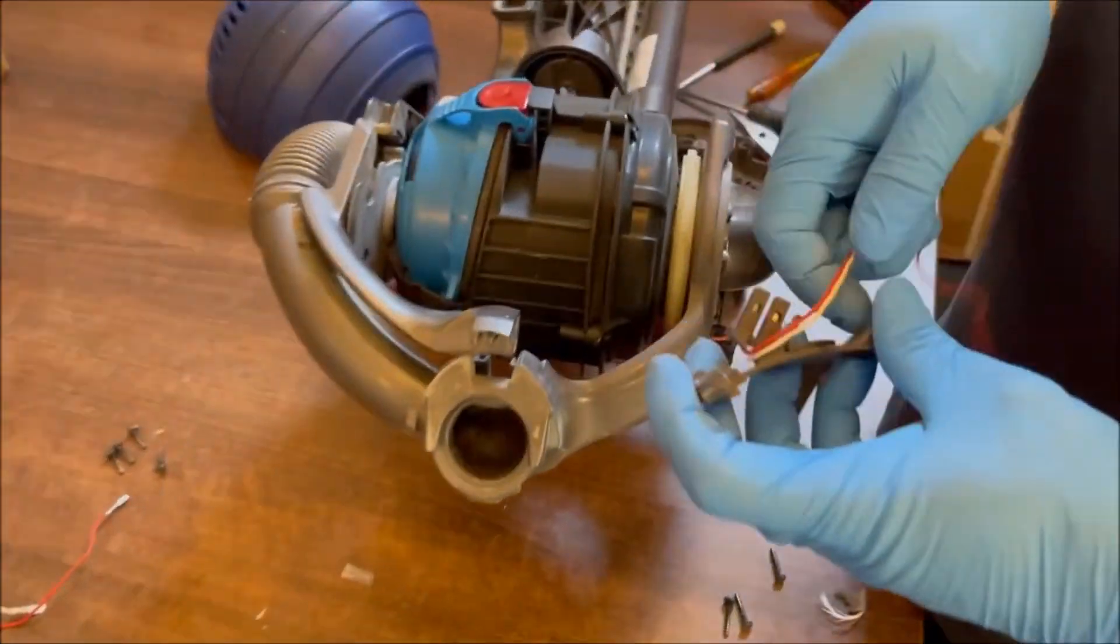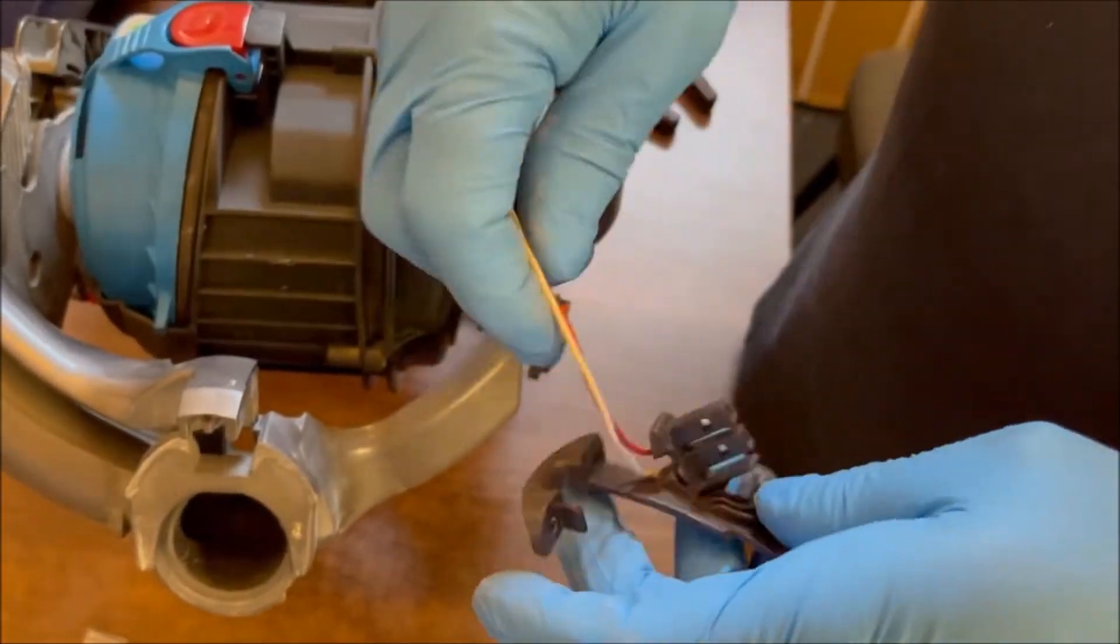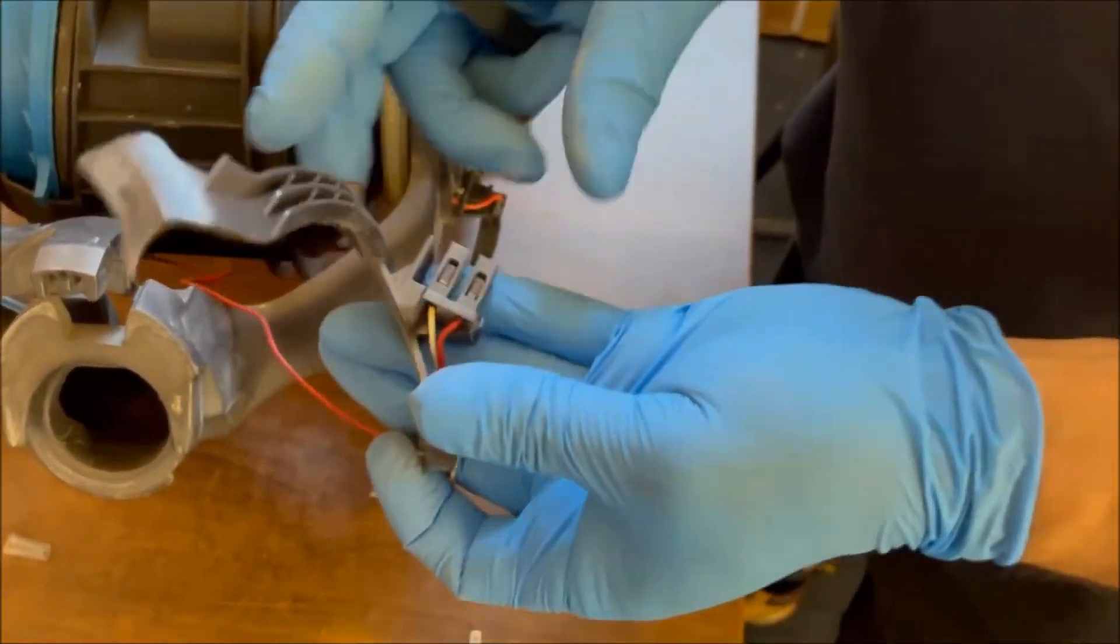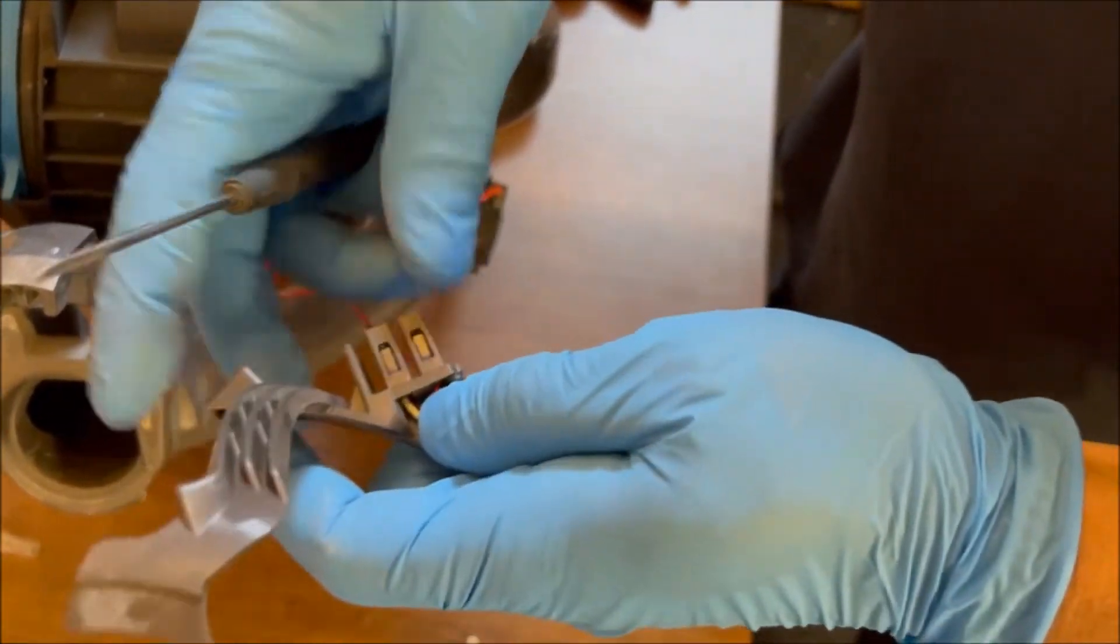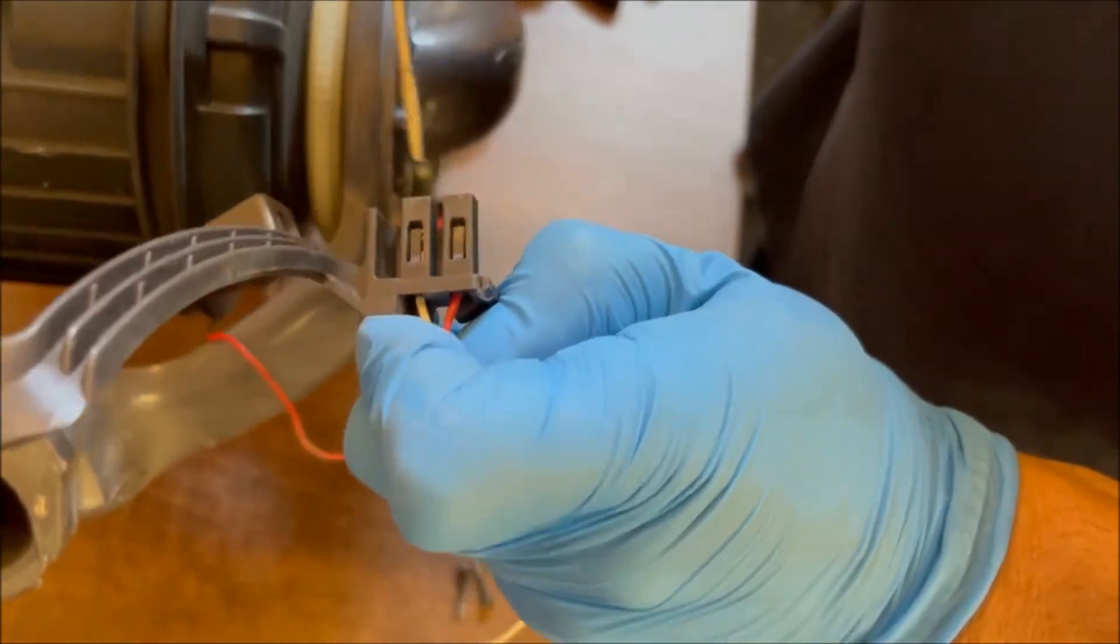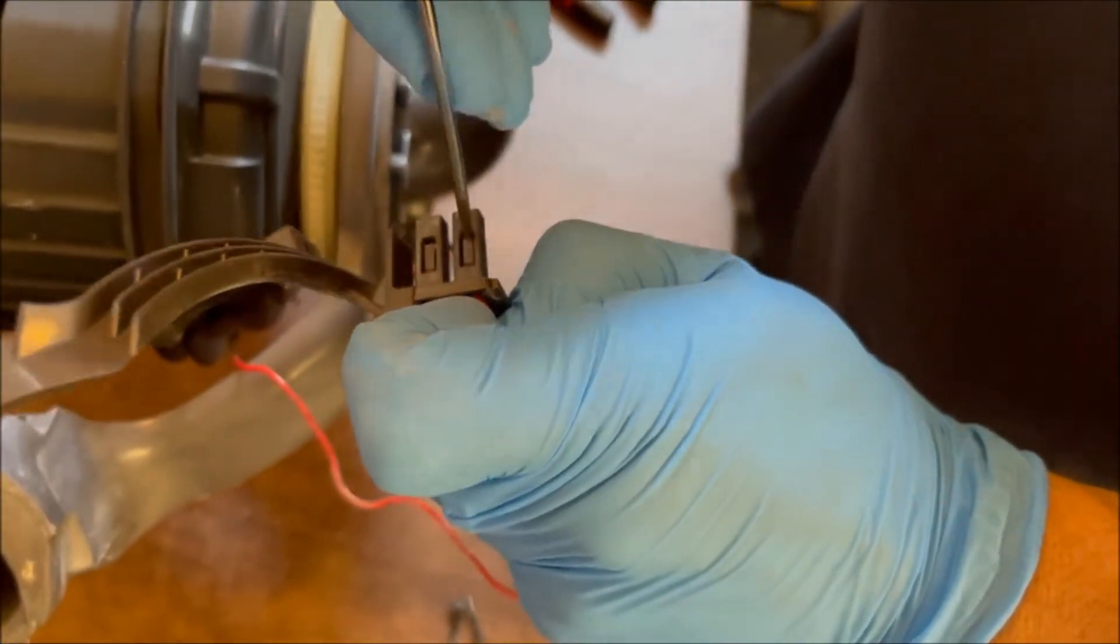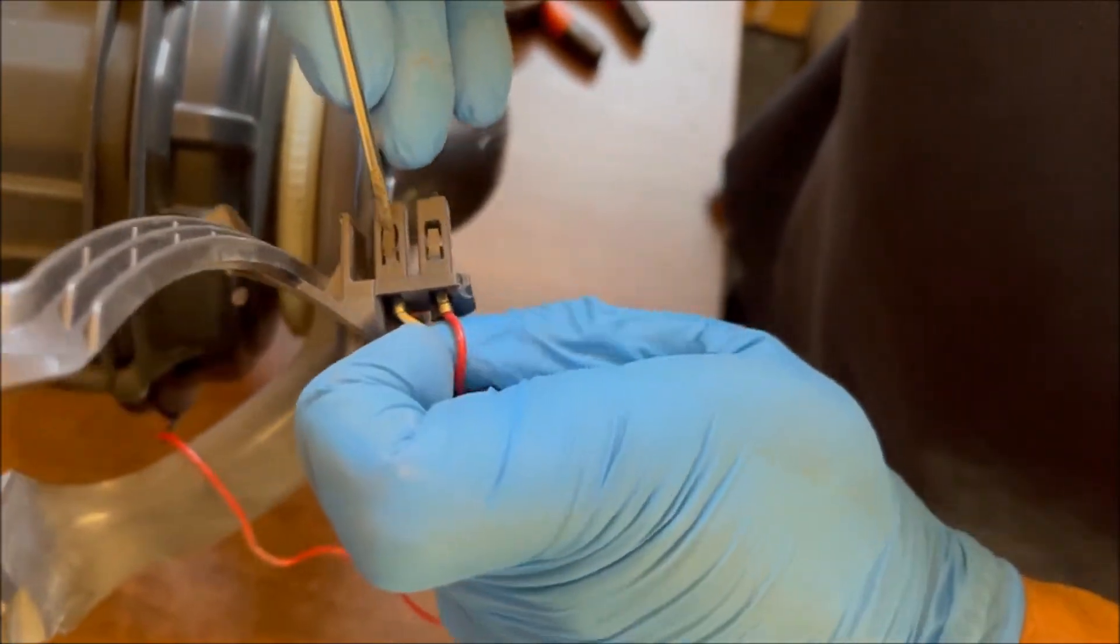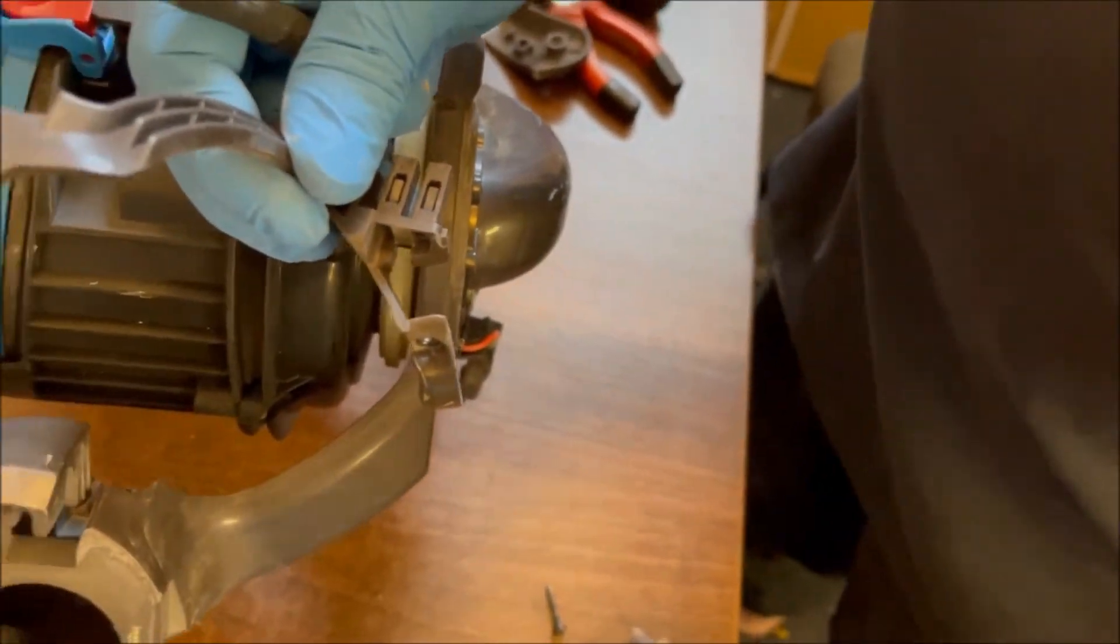Again, observe here where the wires go. And you release the clips from inside the frame with something very small, small screwdriver, little spike, something like that, like this. Out comes the loom.